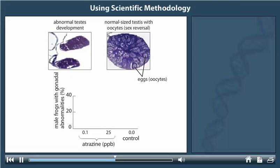Under these controlled conditions, 36% of the frogs from the lowest atrazine treatment and 12% of the frogs from the highest treatment showed abnormal testes development called gonadal dysgenesis. A single frog from the control group showed gonadal dysgenesis.